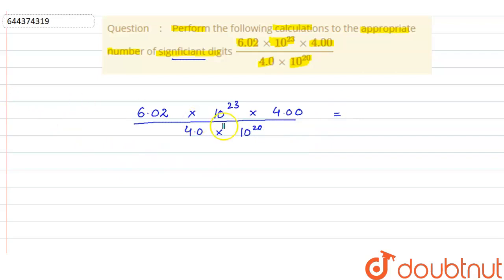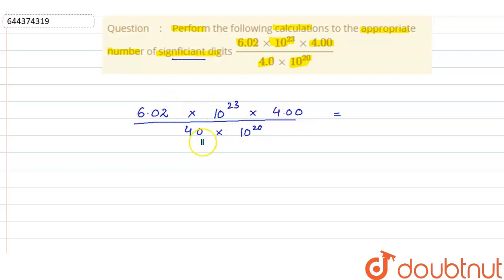There is a rule of calculation: when we have to find the answer in appropriate significant digits, there should be the least number of significant digits among all the values. For example, if we look at this calculation, in 6.02 we have three significant digits — six, zero, and two — because this zero is in between two non-zero digits, so it is also significant.